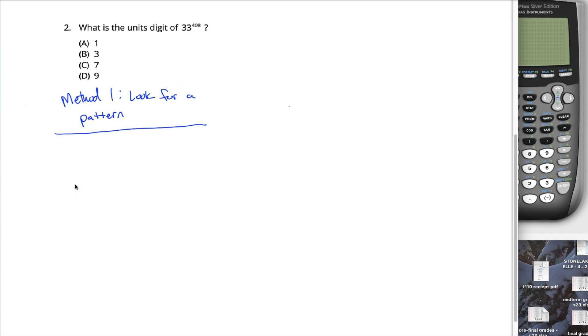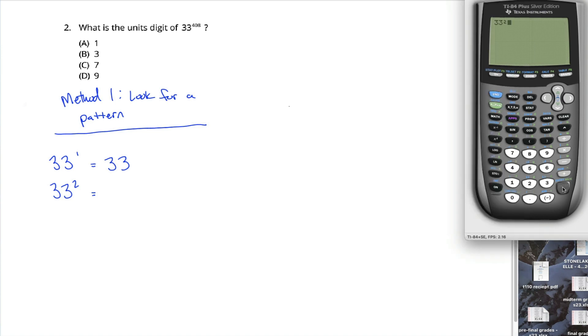Instead of considering 33 to the 408th power, maybe consider 33 to the first power. Wait, isn't that just 33? Yup. Then consider 33 to the second power, 33 times 33. You don't need to actually figure that out because you get a calculator. 33 squared is equal to 1089.